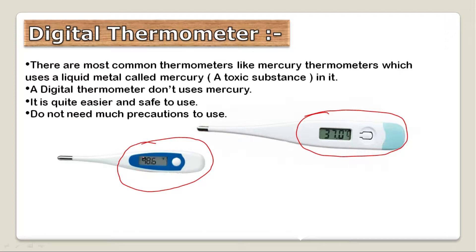Another advantage of digital thermometers over mercury thermometers is the reading. Digital thermometers give a numeric reading, which is much easier to read than mercury thermometers.